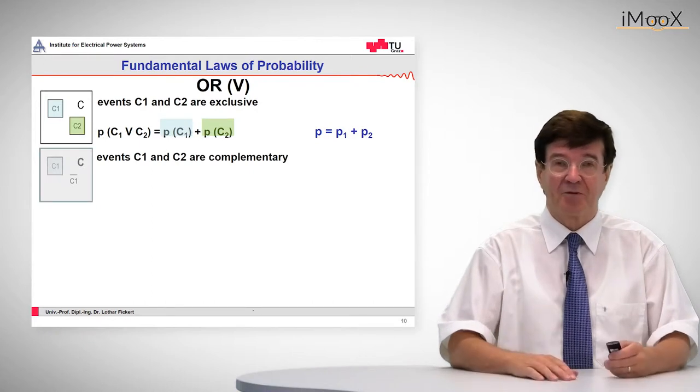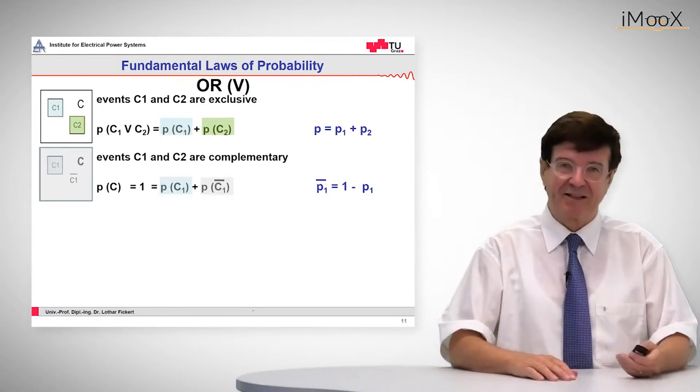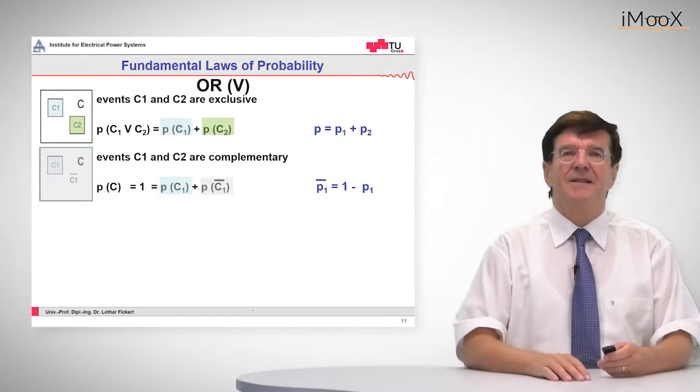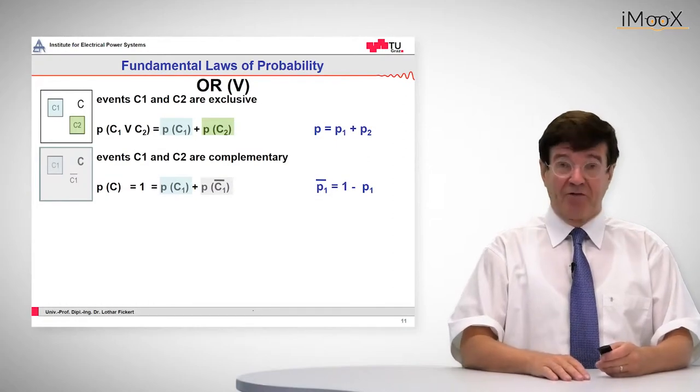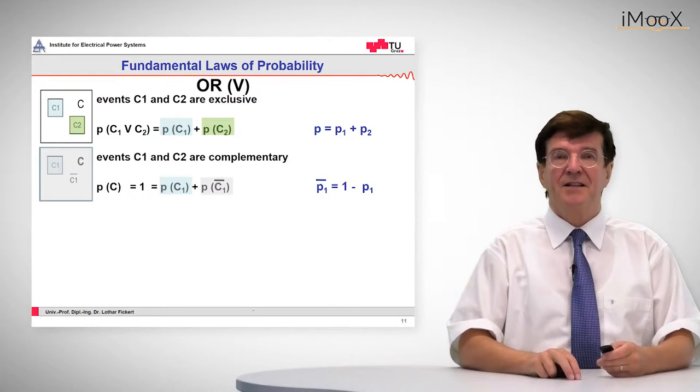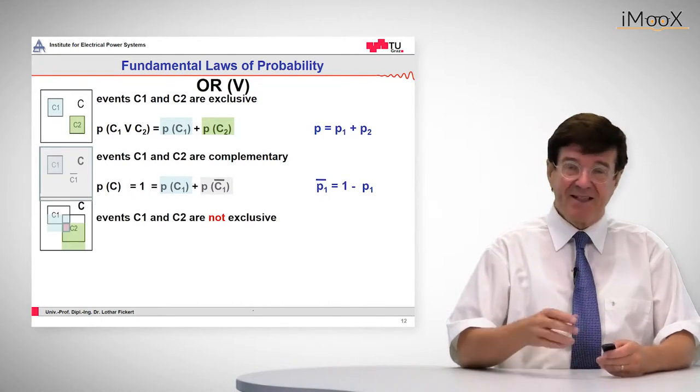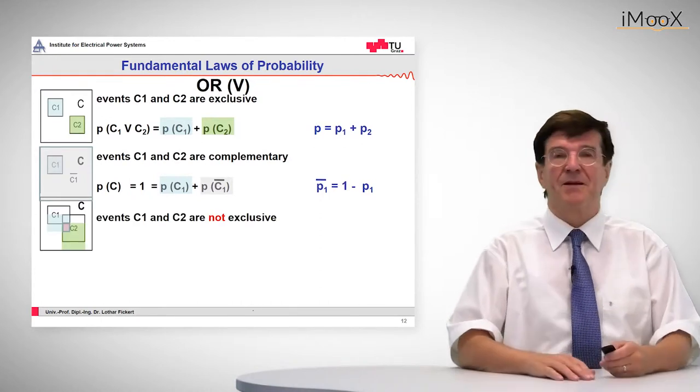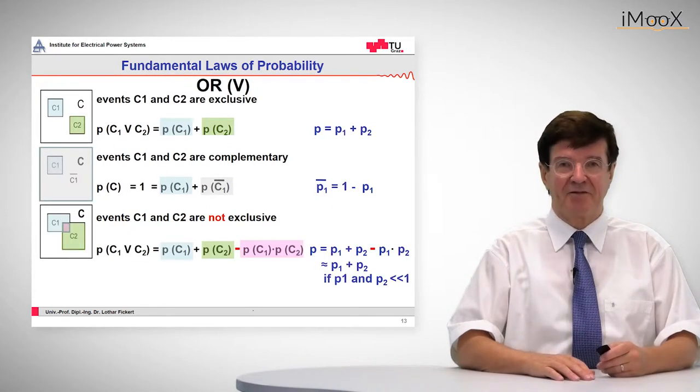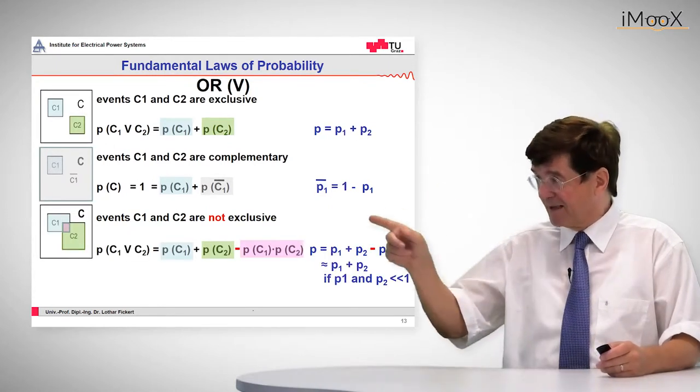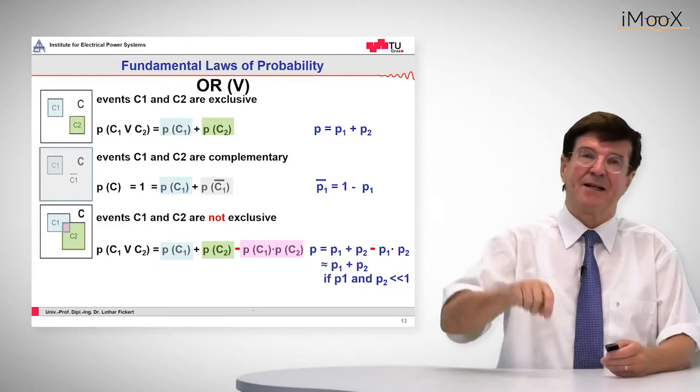If the two events are complementary, p of the complementary event is 1 minus p1. The OR condition can be modified if the two events are not exclusive. Then the probability is given as the sum of the single probabilities minus the product.